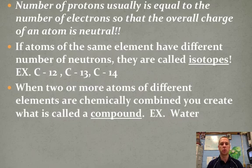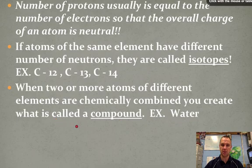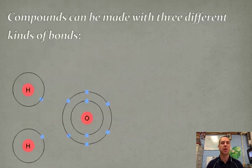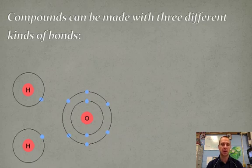And the last little thing, when two or more atoms of different elements are combined, then it creates what we call a compound, such as water, H2O. And the two elements are hydrogen and oxygen here that are combined to make this compound. Now, how are compounds made? There are three different ways, and this will be a listing question on the test. There are three different kinds of bonds.